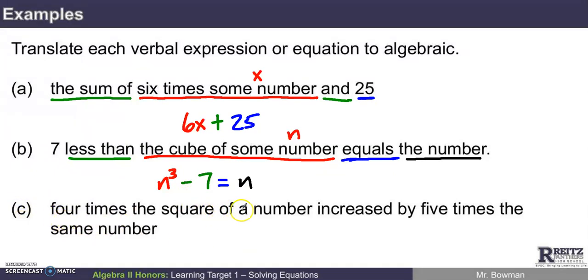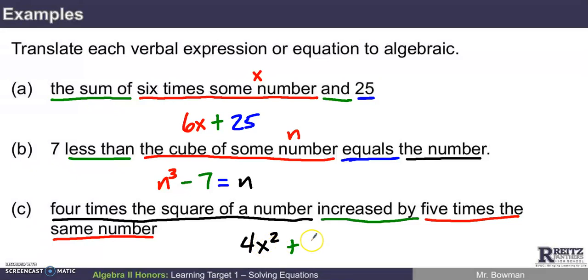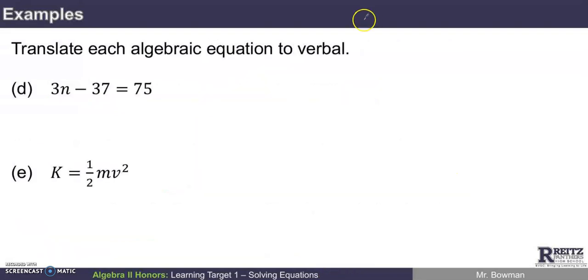And then the last one on this page, four times the square of a number increased by five times the same number. Well, I've got four times. First of all, I don't see an equal sign. I know this is going to be an expression. I've got four times the square of a number. So some number X, if I square it and then multiply that by four, I've got 4X squared. Four times the square of a number increased by implies that we're going to be adding. And what are we increasing it by? Well, we're increasing it by five times the same number. So the same number would be X again. Five times that number is 5X. How about 4X squared plus 5X?